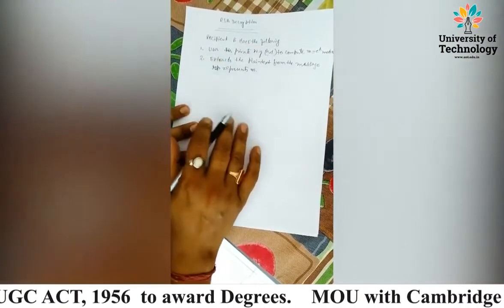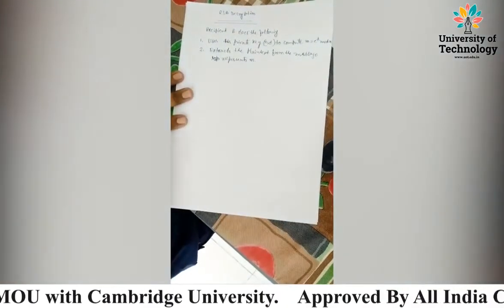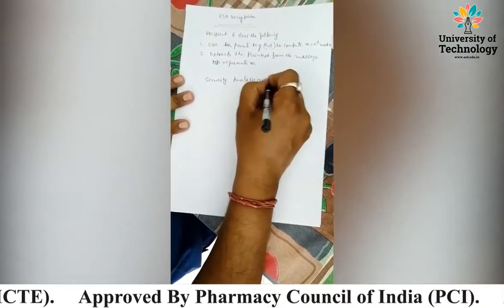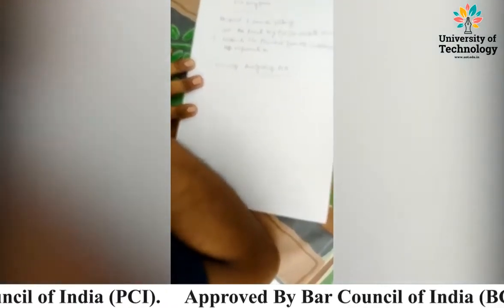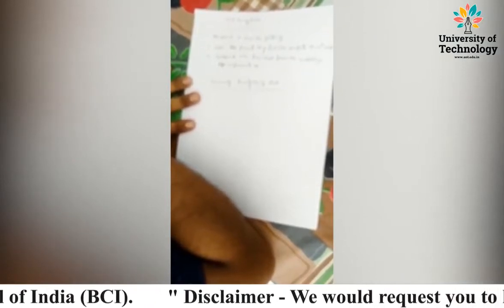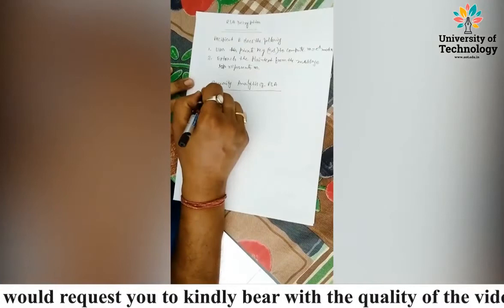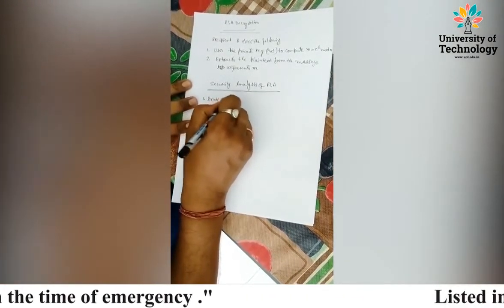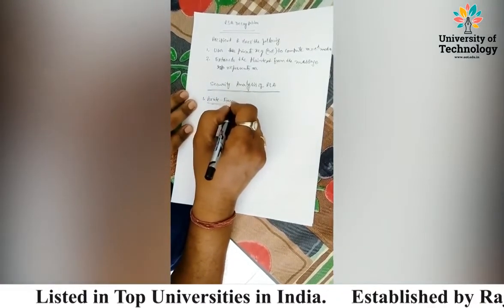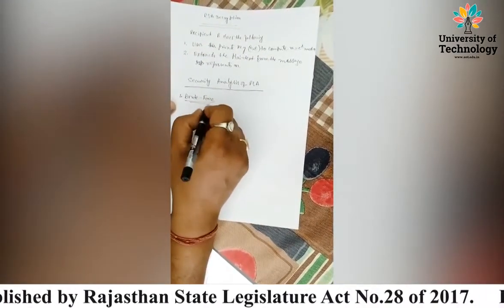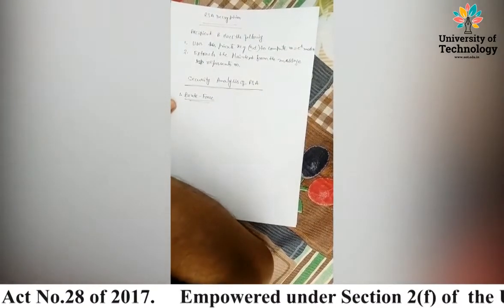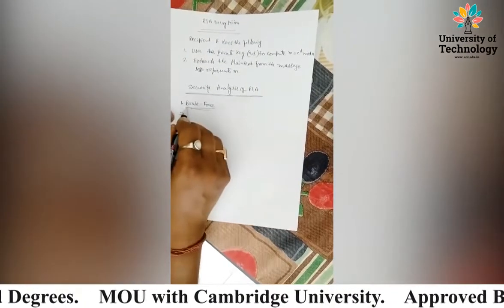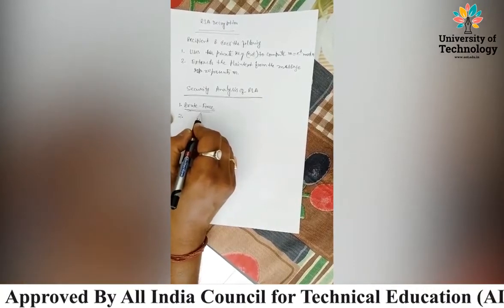Now the main point of this overall algorithm is the security analysis of RSA. There are four possible approaches to security. The first is brute force: this process basically involves trying all possible private keys. Using more private keys will increase the security level and make the RSA algorithm more secured.